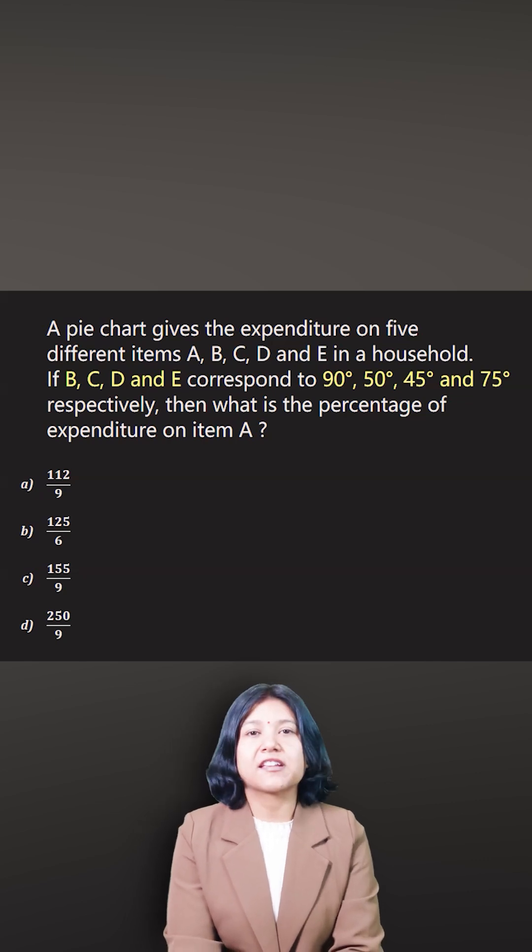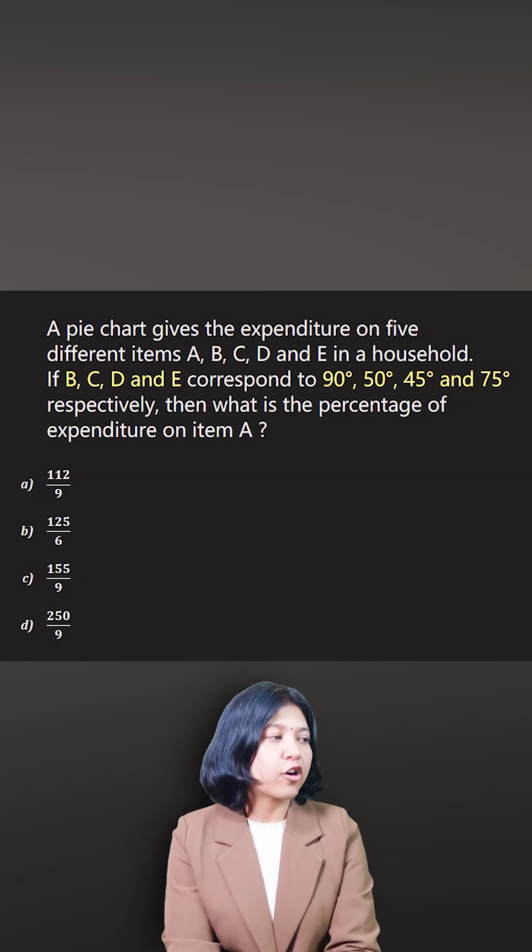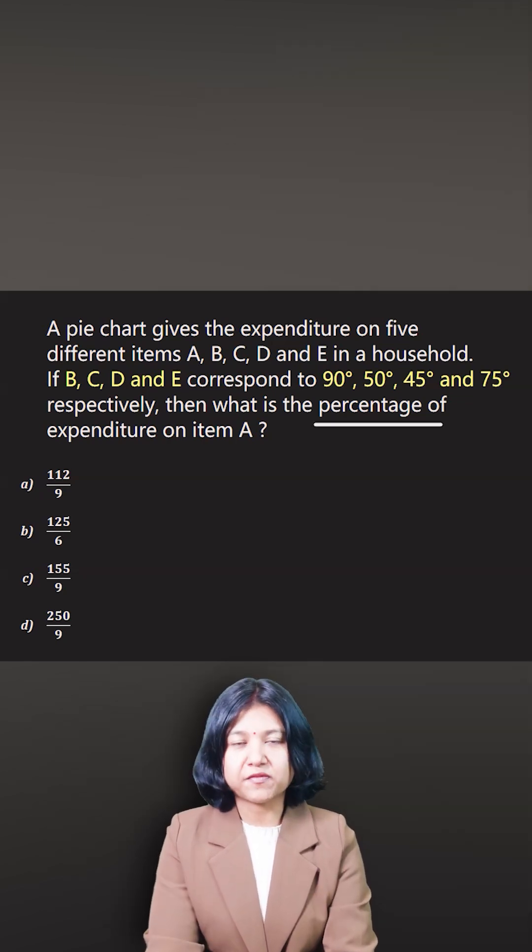You have been given a pie chart that gives the expenditure of five different items in a household. You have been given the angle made by four of them on a pie chart. You are supposed to find the percentage of the expenditure on item A because that is missing.